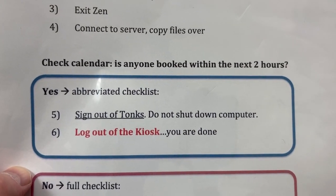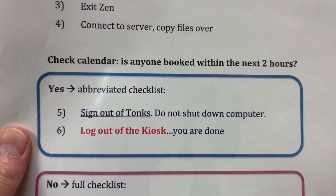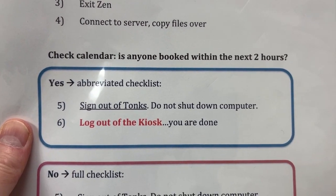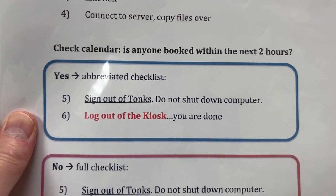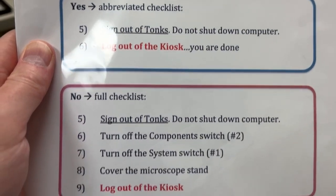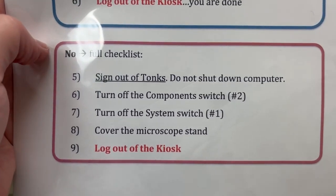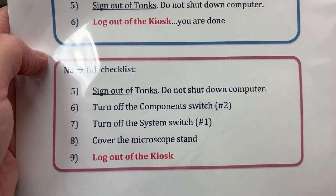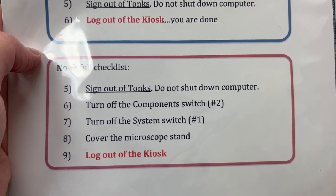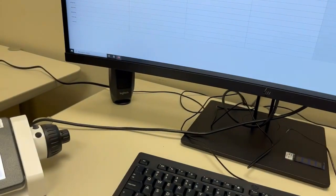If there were someone booked within the next two hours, we would do the abbreviated checklist where we would sign out of Tonks, not shut down the computer, and log out of the iLab kiosk. Because there's no one after us, we'll do the full checklist, the first step of which is to sign out of Tonks but not shut down the computer.